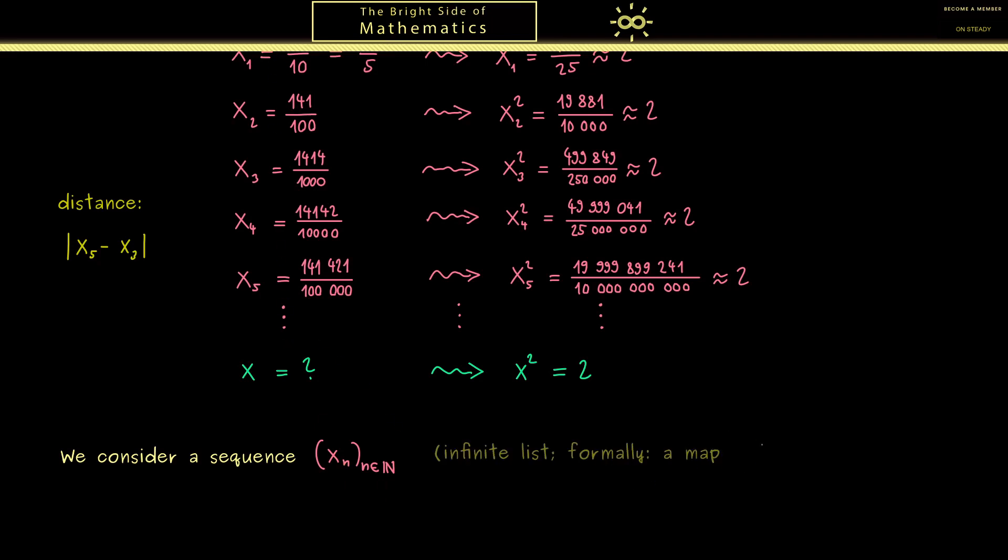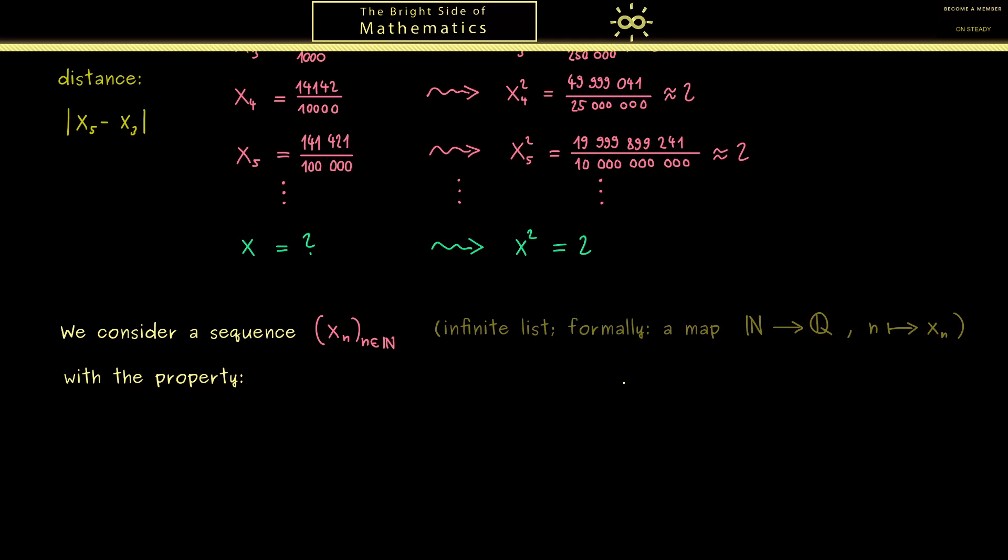Or formally you would say it's a map from ℕ into Q. However, it shouldn't be just any sequence of numbers. We want to have the property that the distance between the members gets smaller and smaller. To correctly formulate this, we would choose any small number ε. And then we would have an index capital N, such that for all other indices n and m we would have the following: if ε is a positive number and n, m are greater than the capital N, then this implies that the distance between the members xₙ and xₘ is always less than ε.